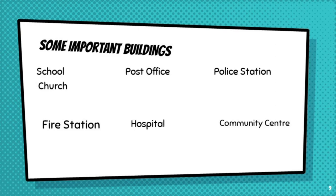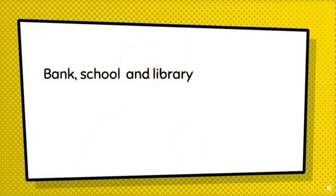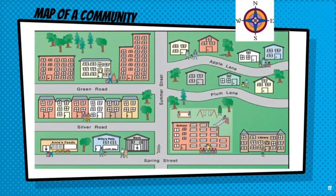Now, what are some of the important buildings we can see on the map? We see a bank — what else? A school and a library — very good! Now we are going to use the compass rose to locate places on the map. Here we go with the first question: which important building is east of the school? Look closely — what is east of the school? The library! Good — awesome job! Now, which important building is west of the school? We see the bank — wonderful!